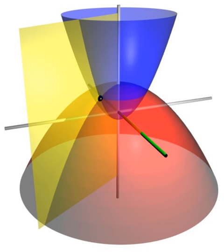A point in the plane may be represented in homogeneous coordinates by a triple (x, y, z) where x/z and y/z are the Cartesian coordinates of the point. This introduces an extra coordinate since only two are needed to specify a point on the plane, but this system is useful in that it represents any point on the projective plane without the use of infinity. In general, a homogeneous coordinate system is one where only the ratios of the coordinates are significant and not the actual values.